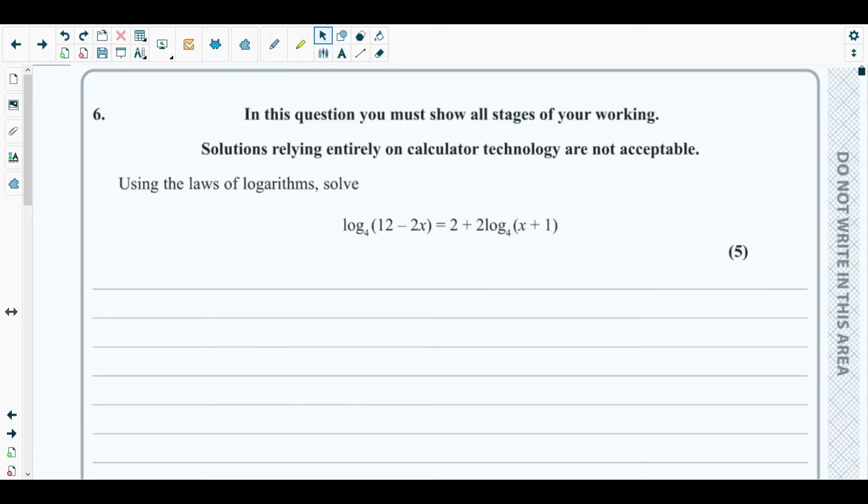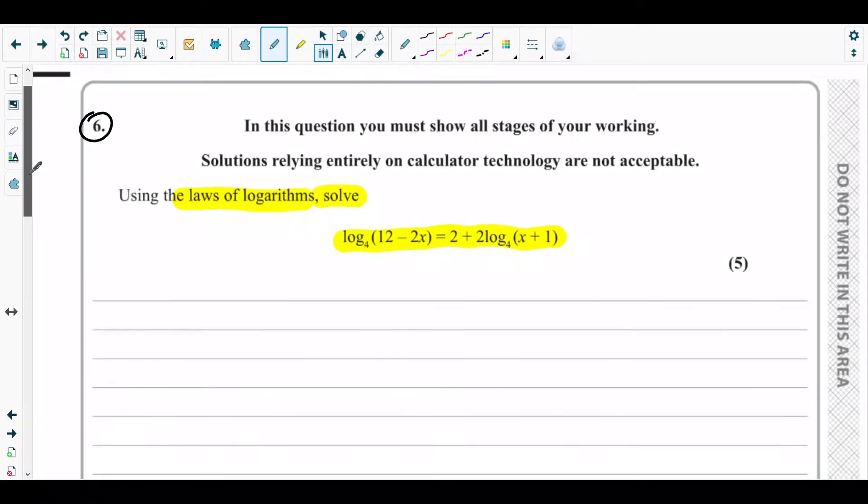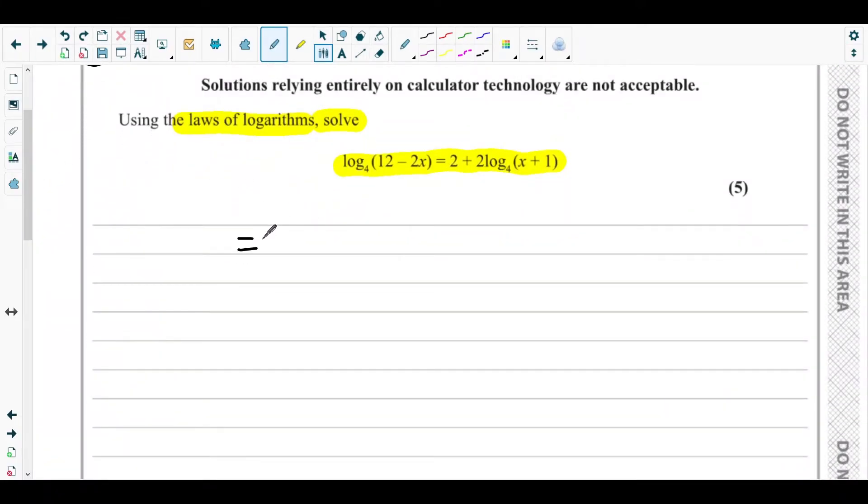Let's get started with question number six. Using the laws of logarithms, solve log base 4 of (12 - 2x) = 2 + 2 log base 4 of (x + 1). We need to solve this logarithmic equation.